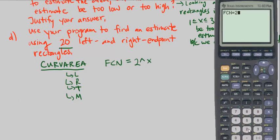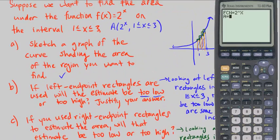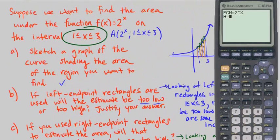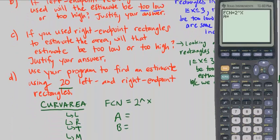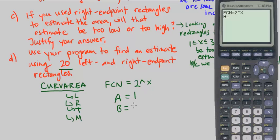So go ahead and put in the function is 2 to the power of x, written like that, so 2 exponent x. A and B are boundaries. Where are we starting and where are we stopping? Well here we're going from 1 to 3, so A is 1 and B is 3. So I'm going to put A is 1, B is 3, and finally N is the number of rectangles or regions and we're told 20.